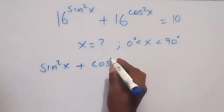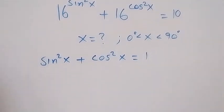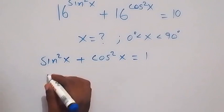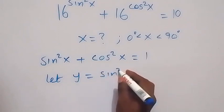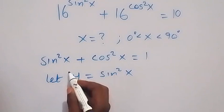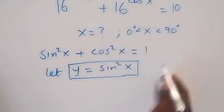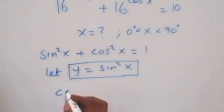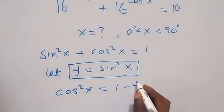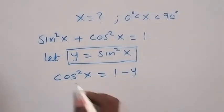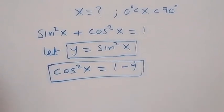Recall that sine square x plus cos square x equals 1. We let y be equals to sine square x. From here, cos square x will be 1 minus sine square x, which is 1 minus y. So cos square x equals 1 minus y.